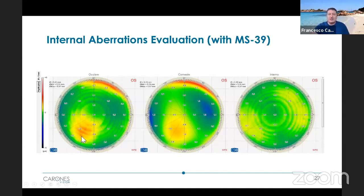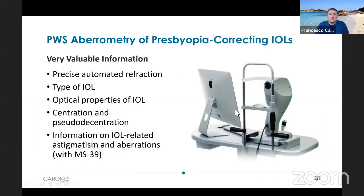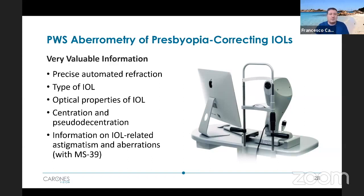Just to conclude: I think that aberrometry through the OSIRIS gives very valuable information. Not only is it a good way to precisely refract these patients — where conventional aberrometers are sometimes not able to do so — but through this analysis you can really assess what type of IOL has been implanted, assess the properties of the IOL, discriminate between real centration and pseudo-centration, and — if you already have the MS-39 anterior segment OCT — get all the information related only to internal aberrations that cannot be measured in other ways. Thank you very much for your attendance.